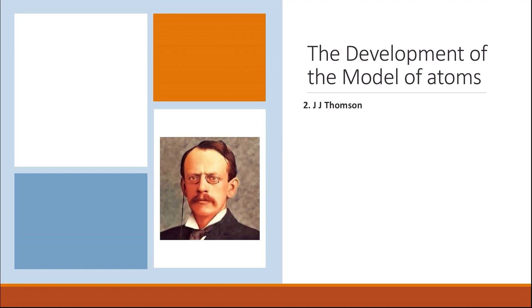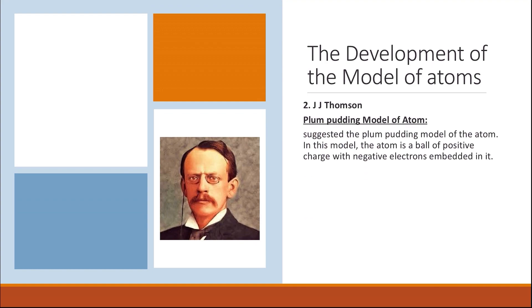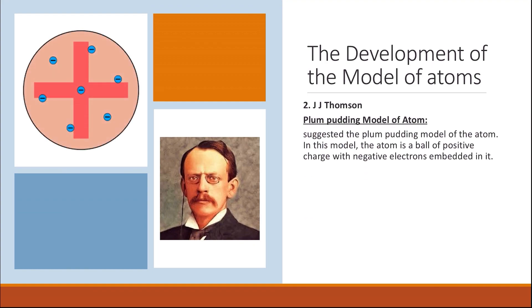Then came J.J. Thomson. Thomson suggested the Plum-Pudding model of an atom. In this model, the atoms are described as being a ball of positive charge with negative electrons embedded in it.